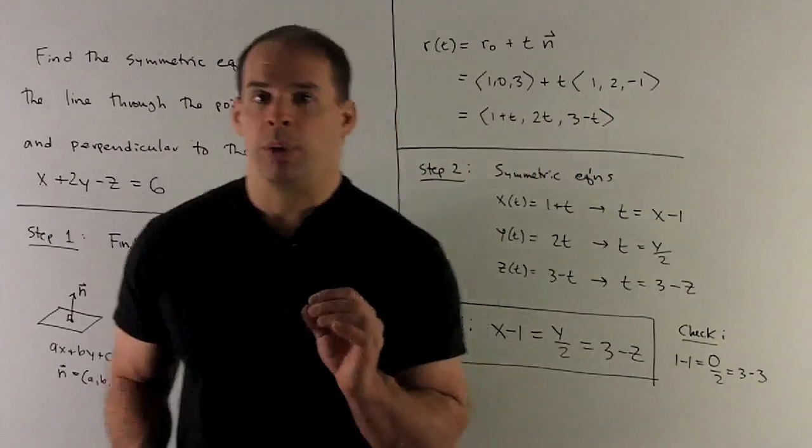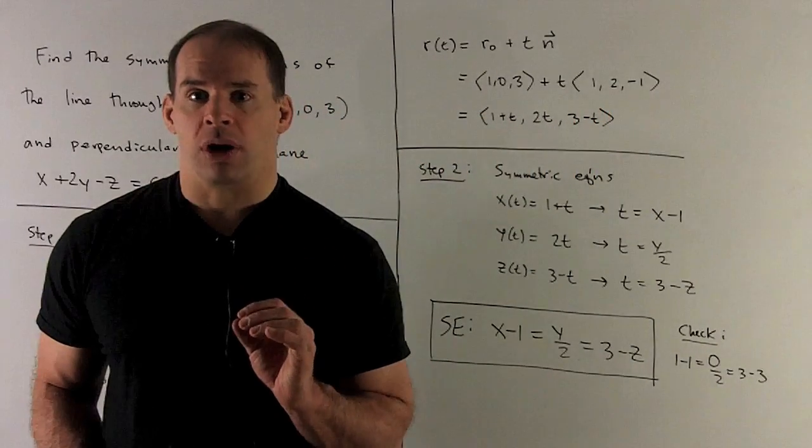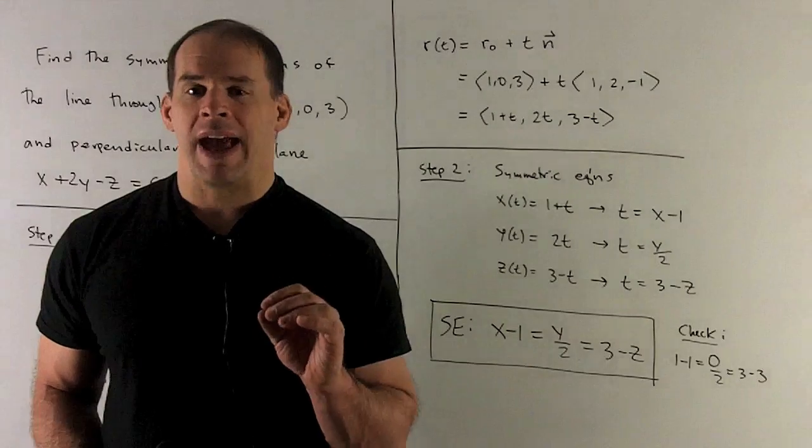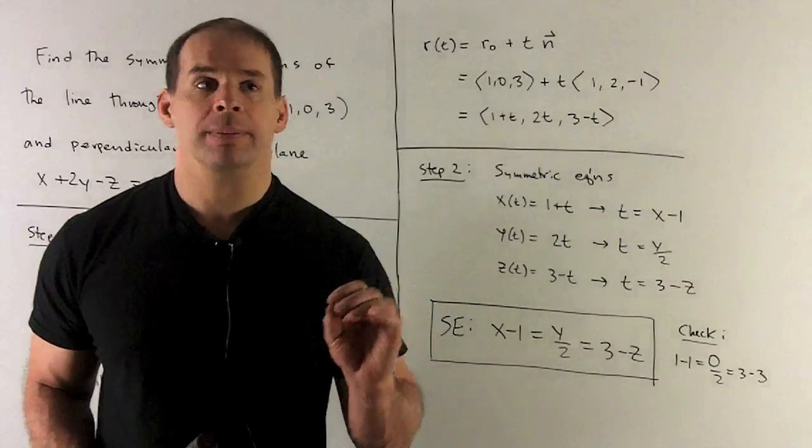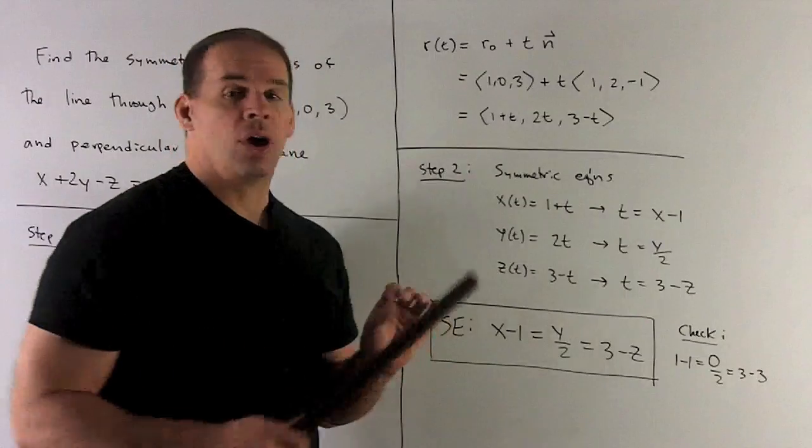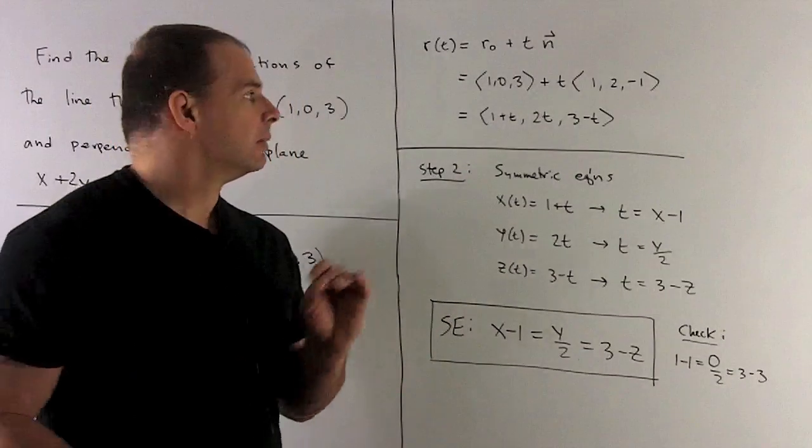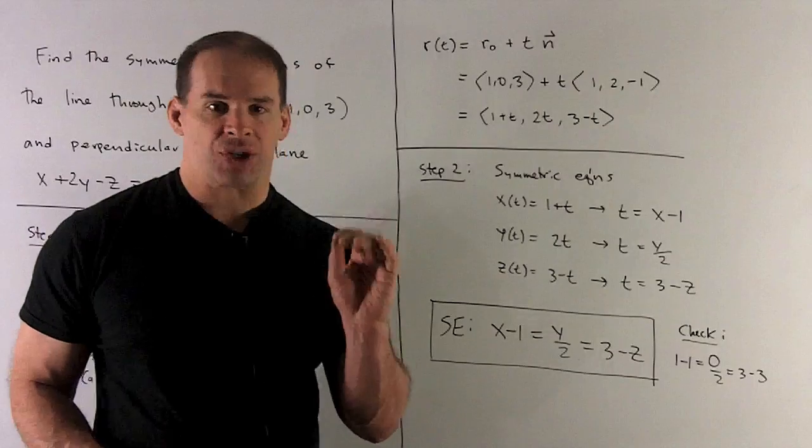Now, having a point and a direction, we can get the vector function for our line by taking our point, adding our direction times t. So in vector function form, we have r(t) equals (1 + t, 2t, 3 - t). That's our line.